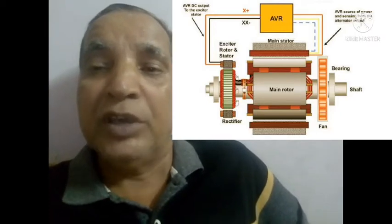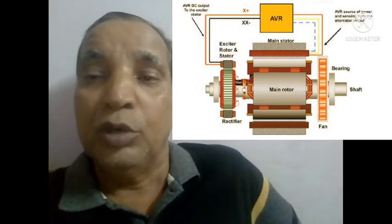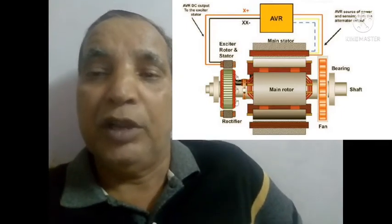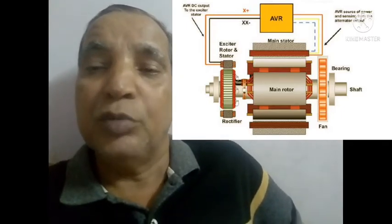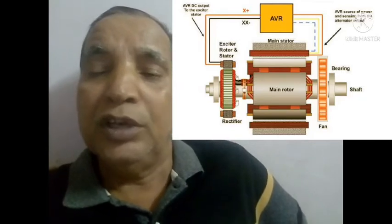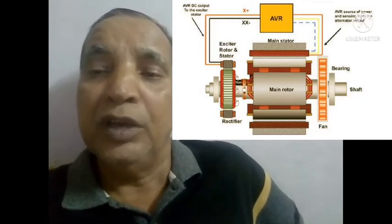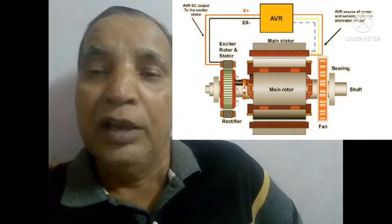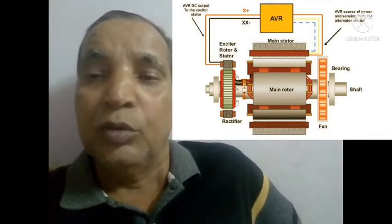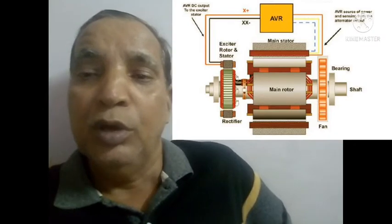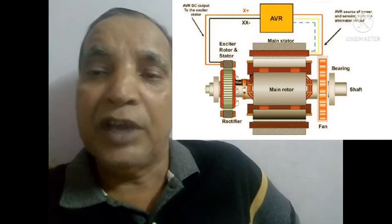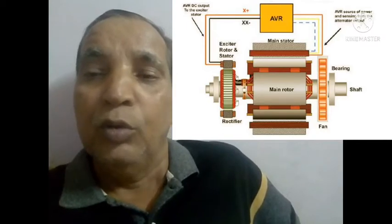From the exciter rotor is built up the DC voltage and given to the AVR through the X and double X wire, or somebody says the F1 and F2 wire. Sometimes when the exciter is not giving the output voltage from the exciter, then we have connected the other way.